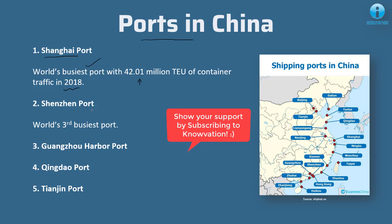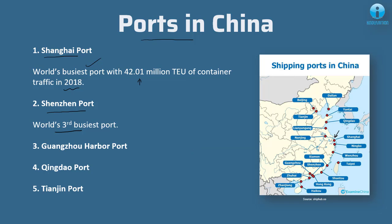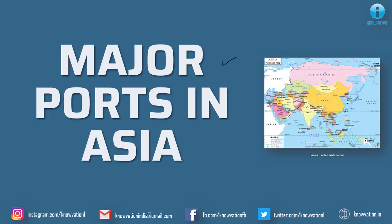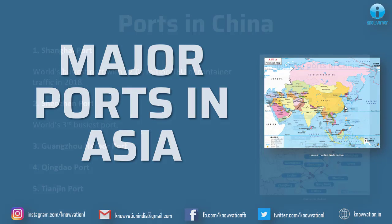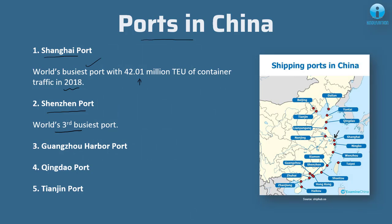Next is Shenzhen port, which is the world's third busiest port, and also the third busiest in Asia. We can see both locations on this zoomed map of China. Shanghai port is located here, and Shenzhen port is here, just near to Guangzhou port.